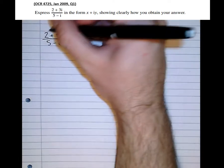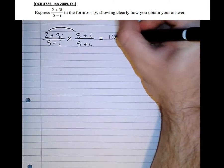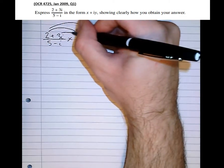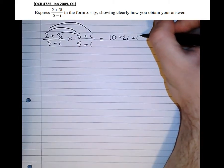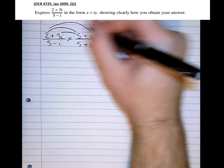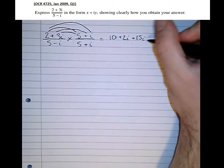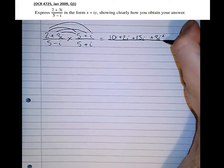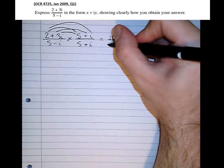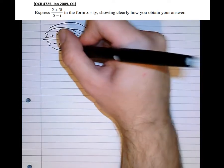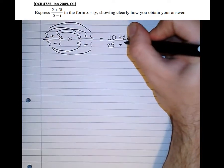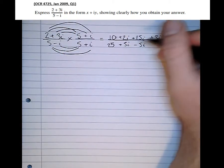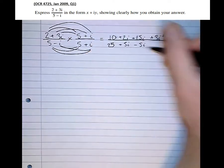So let's do the multiplication. We've got 10 plus 2i plus 15i plus 3i squared over 25 plus 5i minus 5i minus i squared.